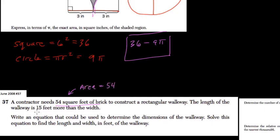The length of the walkway is 15 feet more than the width, so we'll set up a rectangle here. The area is 54. The length is 15 more than the width, so this is width. I'll switch that so it makes sense in terms of being longer. If this is the width and this is the length, the length equals the width plus 15.